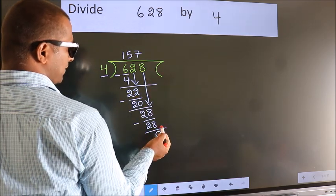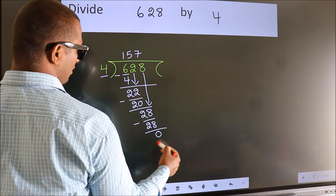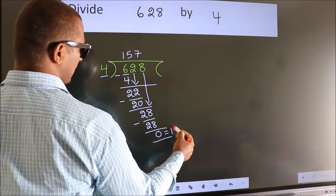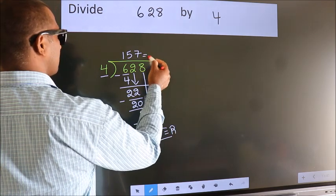No more numbers to bring it down. So, we stop here. This is our remainder. This is our quotient.